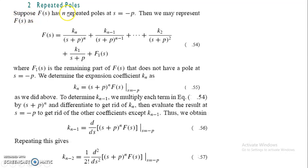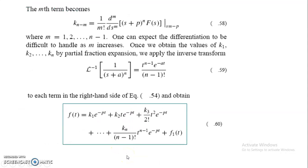For repeated poles, suppose f of s has n repeated poles at s equals minus p. We decompose f of s accordingly. To find coefficient kn, we use successive differentiation with respect to s. Finding repeated poles requires differentiating one more time for each additional repeated pole. If there are m repeated poles, the differentiation becomes progressively more difficult as m increases. Once we have the values of k1, k2, k3 from the partial expression, we apply the inverse transformation.